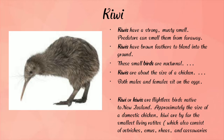The next bird is the kiwi. Kiwi have a strong musty smell and are nocturnal birds. They mostly eat worms and insects. Kiwi have brown feathers to blend into the ground and are about the size of a chicken. Both male and female sit on the eggs. Kiwis are flightless birds.